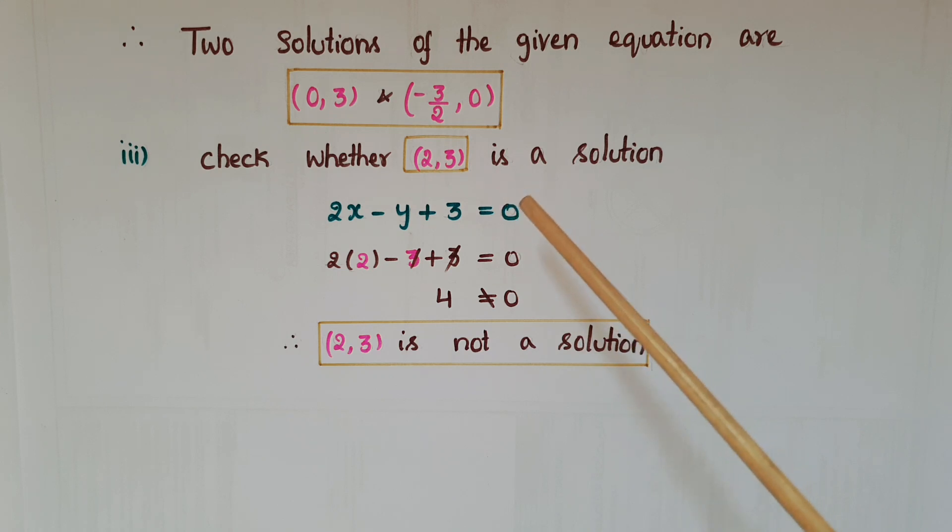Now we have to check whether (2,3) is a solution of this equation. Substitute these x and y coordinates in this equation: 2 into 2 minus 3 plus 3 equals 0, then 4 is not equal to 0. So (2,3) is not a solution of this equation.